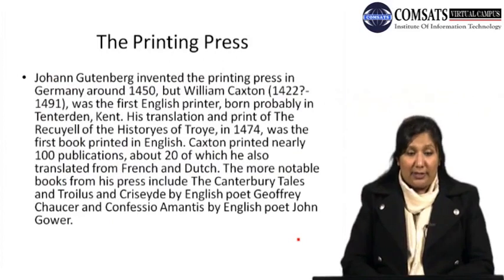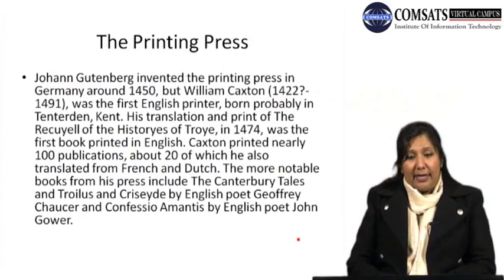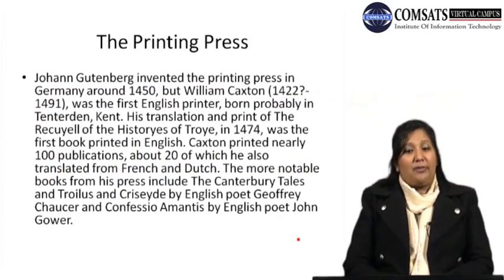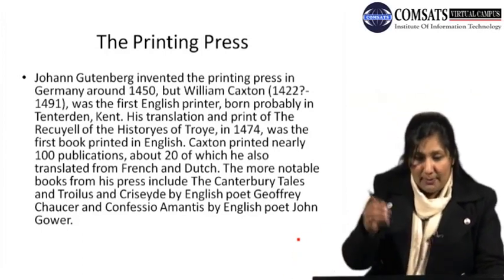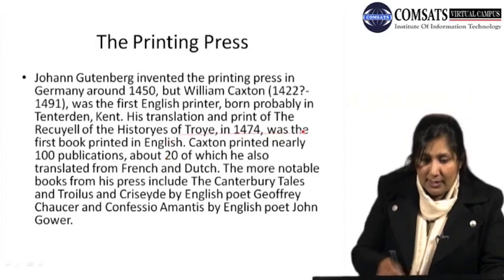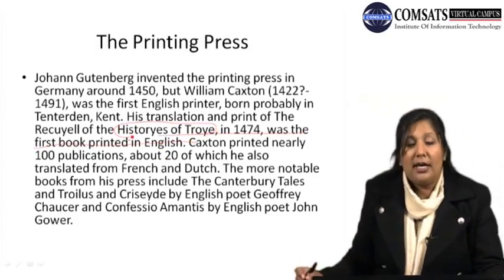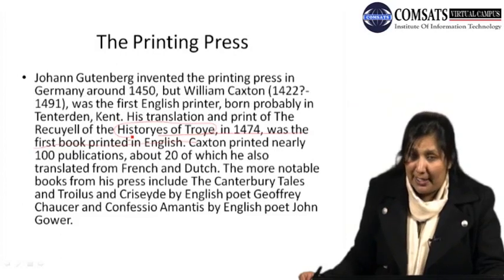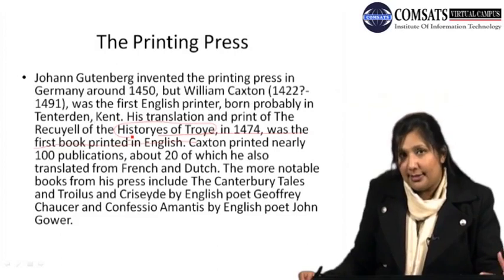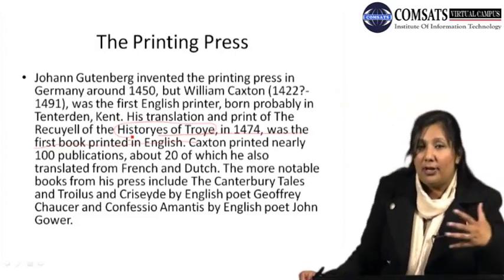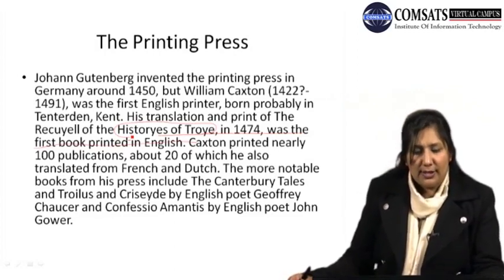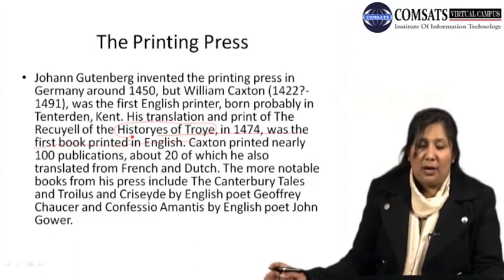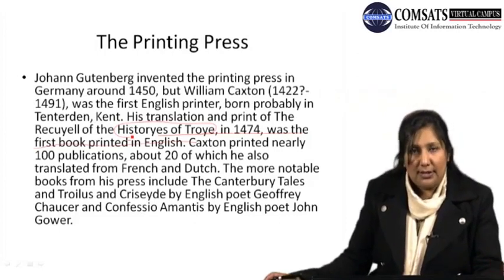Another very important event of this age was the printing press. John Gutenberg invented the printing press in Germany around 1450, but William Caxton was the first English printer, born probably in Tenterden, Kent. His translation and printing of the Histories of Troy in 1474 was the first book printed in English. Caxton printed nearly 100 publications, about 20 of which he also translated from French and Dutch. Notable books from his press include The Canterbury Tales and Troilus and Criseyde by Geoffrey Chaucer, and Confessio Amantis by John Gower.